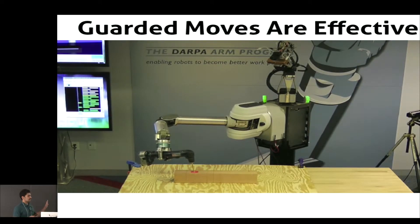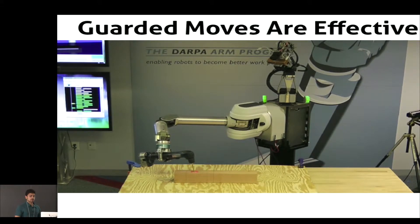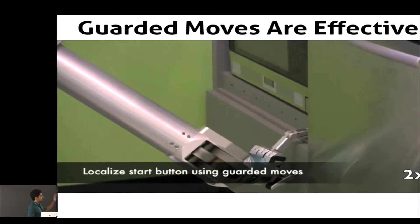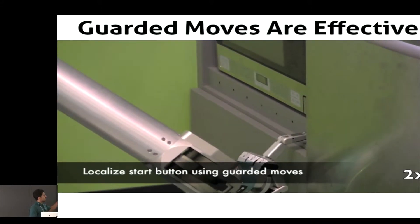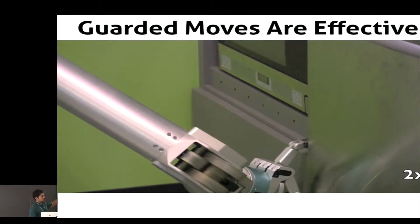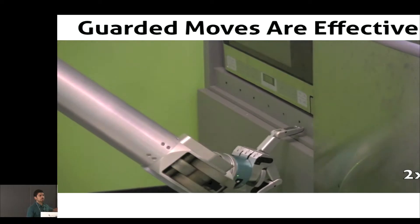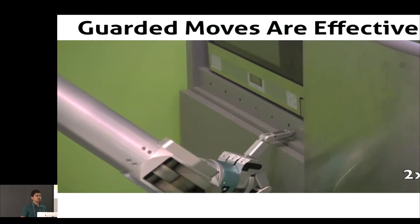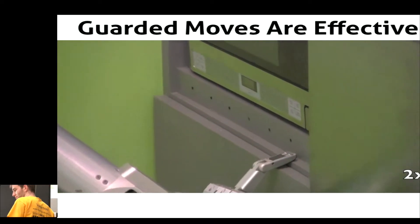This took a task where we were basically failing every time and made it extremely robust. Similarly, with the microwave, what we're going to do is try to push one of the small buttons, and we found a sequence of guarded moves in order to accomplish the task.